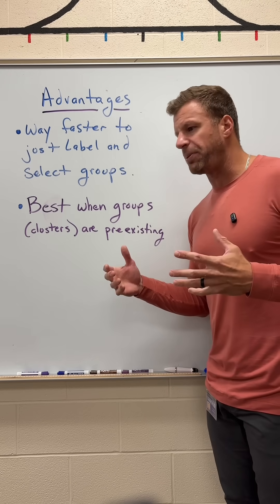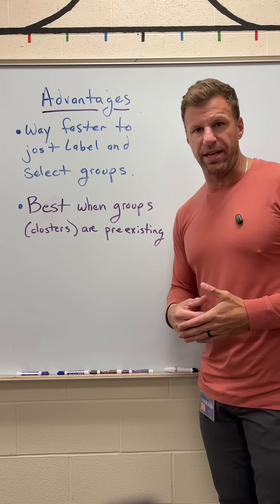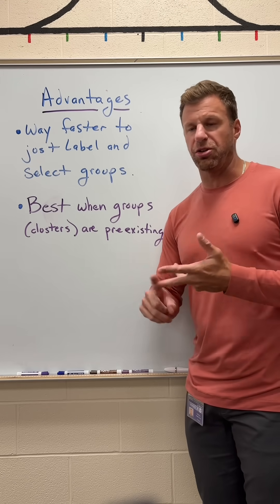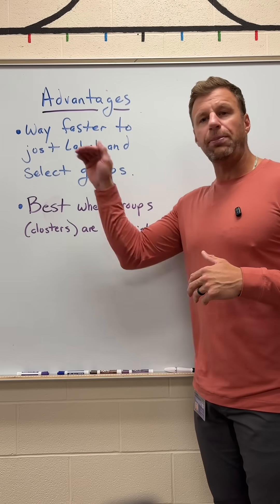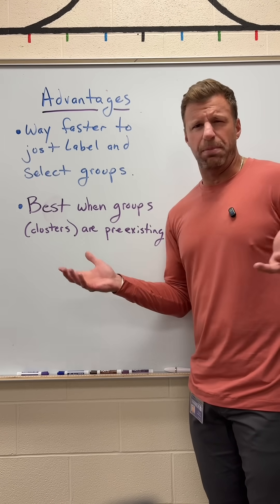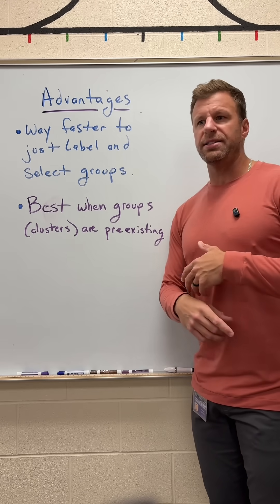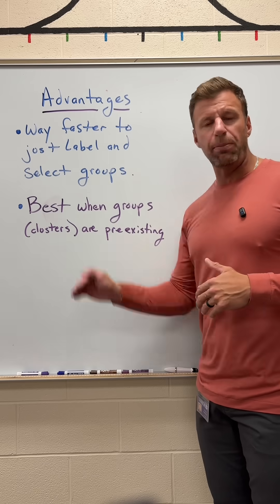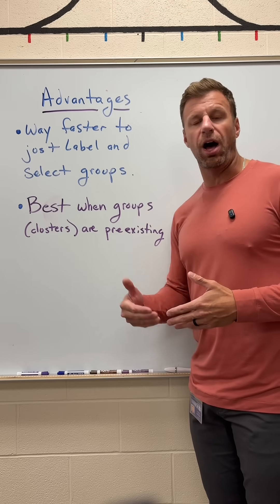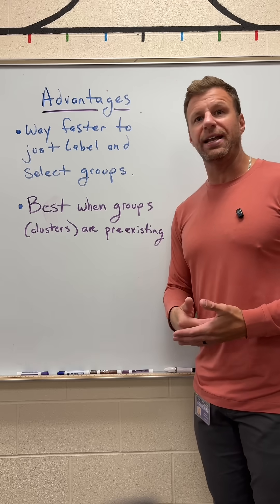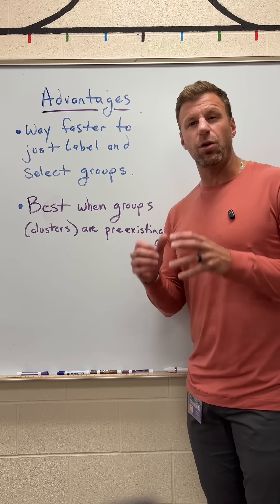Imagine your population is a hospital and you don't have time to label all the employees — doctors, nurses, janitors, administrators, clinical staff, and so on. But if you label each floor, because each floor is like a mini population with doctors, nurses, janitors, clinicians, and secretaries, that's much faster than labeling all the people. Then you randomly select one floor to be your entire sample, and you get a nice representation of all the different types of people in that hospital.